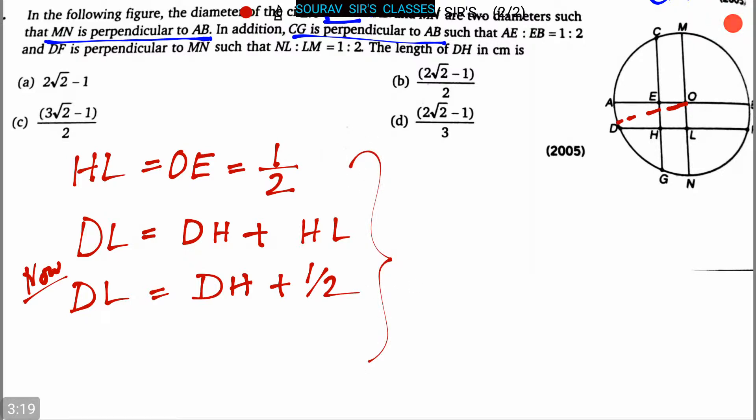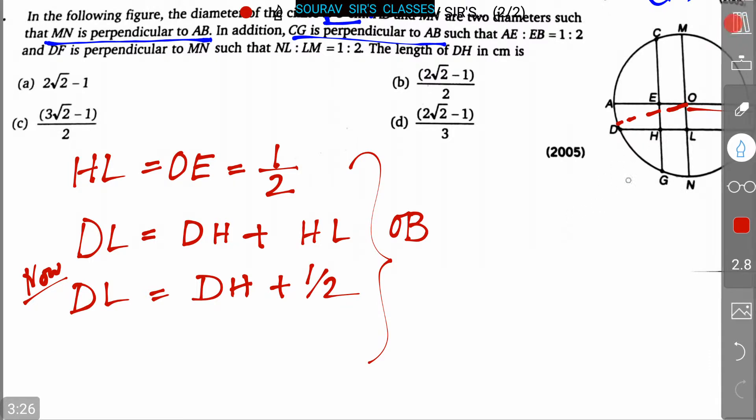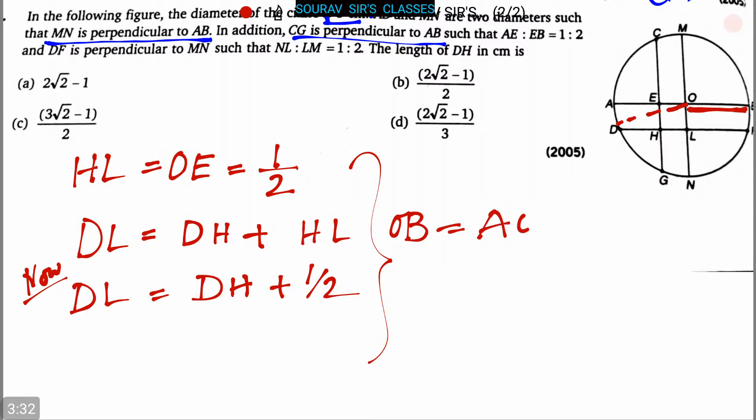We can also say that OB, which is this part, OB is equal to AO, this part, is equal to the radius, which is 1.5.